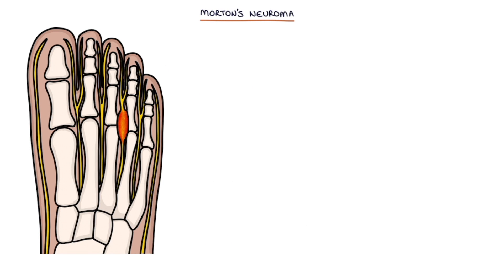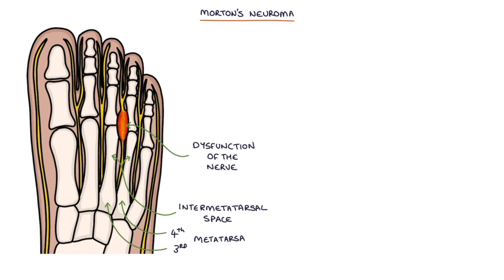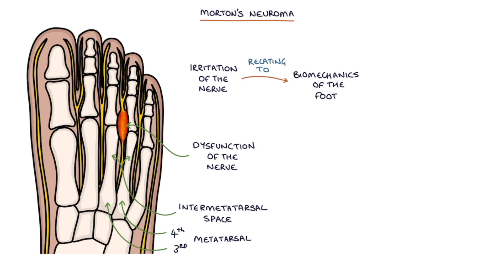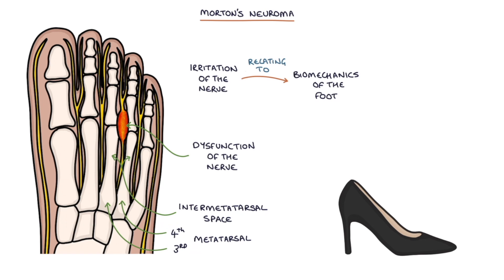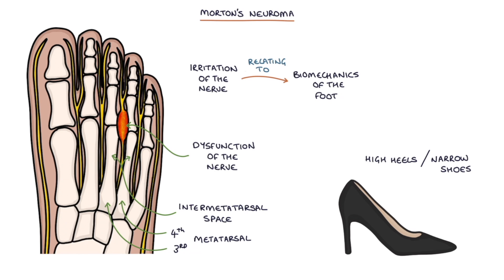Next, let's talk about Morton's neuroma. Morton's neuroma refers to the dysfunction of a nerve in the inter-metatarsal space between the toes, towards the top of the foot. The abnormal nerve is usually located between the third and the fourth metatarsal. It's caused by irritation of the nerve relating to the biomechanics of the foot. Wearing high heels or narrow shoes may exacerbate the problem because they squeeze the metatarsals together, irritating the nerve further.